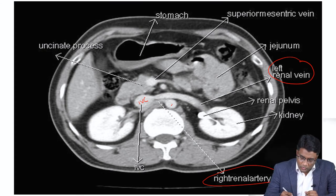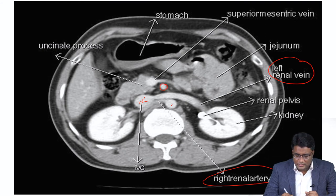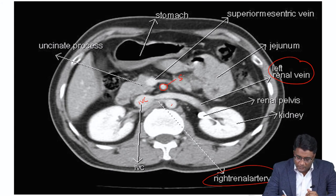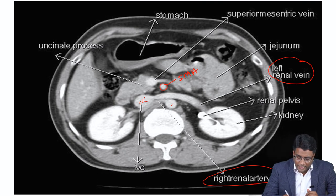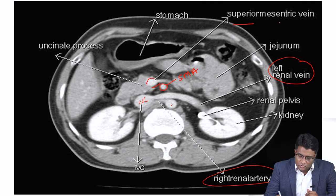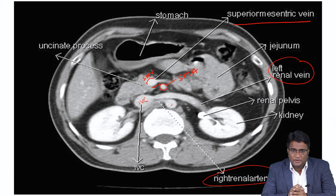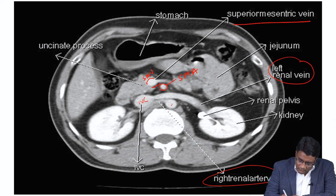Also understand this vessel here — it is a branch of the aorta that has gone in front of the left renal vein. This is your superior mesenteric artery. Towards the right of the superior mesenteric artery, this structure is your superior mesenteric vein. The superior mesenteric vein will always lie to the right of the superior mesenteric artery.